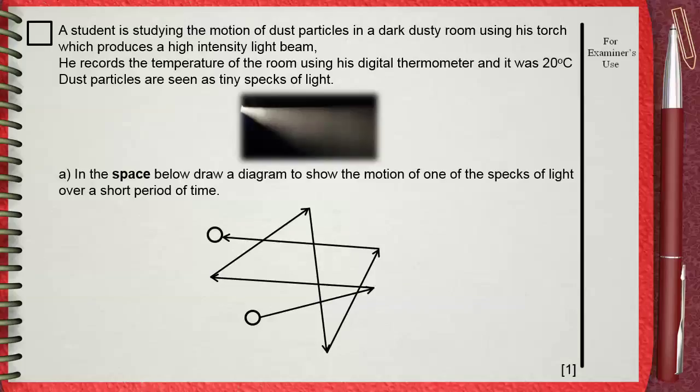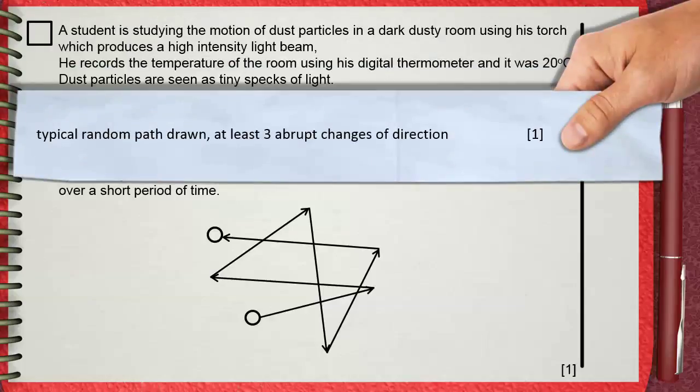This will represent the Brownian motion. This is for only one mark. Typical random path drawn with at least three abrupt changes of direction.